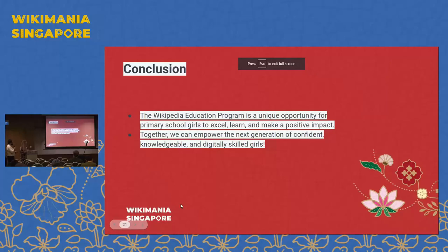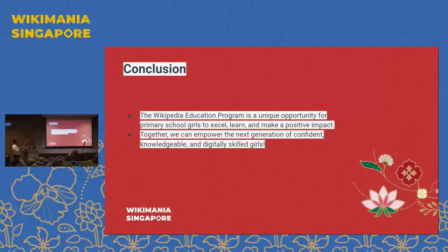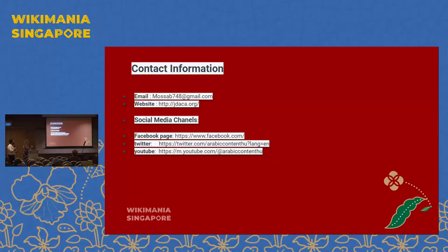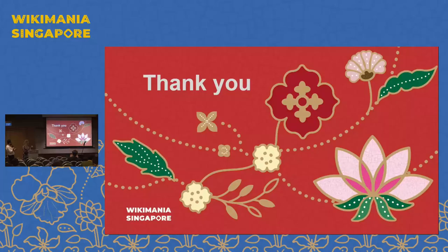In conclusion, our Wikipedia education program is a unique opportunity for primary school girls to excel, learn, and make a positive impact. Together, we can empower the next generation of confident, knowledgeable, and digitally skilled girls. You can find our contacts and social media pages here, where you can also see photos and the contributions of the school girls.